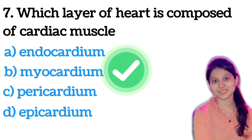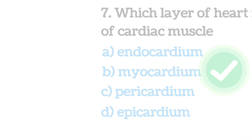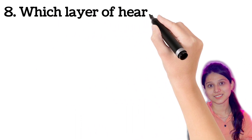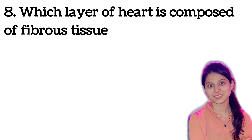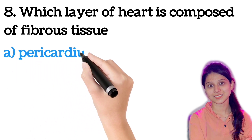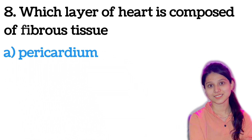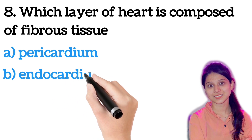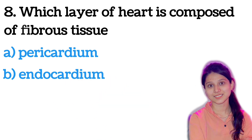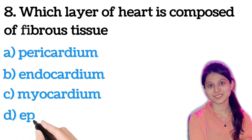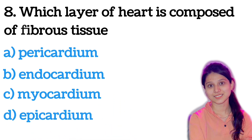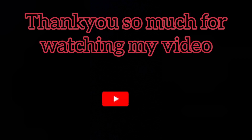Next question, similar to the previous: which layer of the heart is composed of fibrous tissue? Options are: pericardium, endocardium, myocardium, or epicardium. The right answer is pericardium — the pericardium layer of the heart is composed of fibrous tissue.